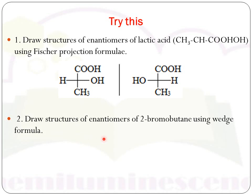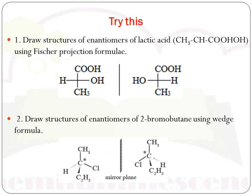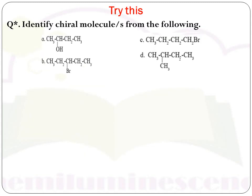The second question: draw the structures of enantiomers of 2-bromobutane using wedge formula. In wedge formula, atoms in the plane are represented by a normal line, bonds above the plane by a bold line, and bonds below the plane by a broken line. These are the structures of the enantiomers of 2-bromobutane. They are enantiomers because they are non-superimposable mirror images of each other, and if one rotates plane polarized light to the right, the other rotates it to the left.